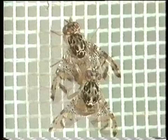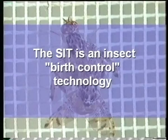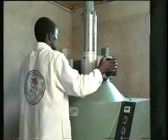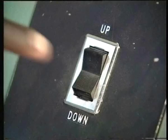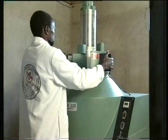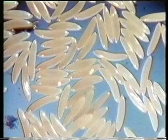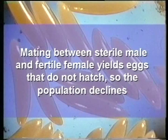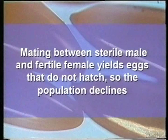The SIT is an insect birth control technology, an autocidal method of pest control that exploits the normal, mate-seeking behavior of insects. Insects, either pupae or adults, when exposed to ionizing radiation, do not become radioactive, but become sterile as a result of dominant lethal mutations in sperm and ova. When a sterile male is released into a population and mates with a fertile wild female, the eggs that she produces do not hatch, due to the genetic damage in the sperm of the male. This lack of offspring yields a population decline.